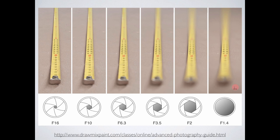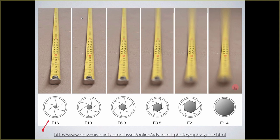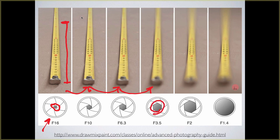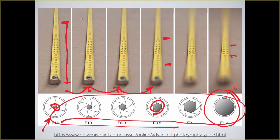Here it is in graphic form. At F/16, this is a very small aperture — a little bit of light coming into the camera — and a fairly large chunk of the tape measure is in focus. As you jump down each level and the aperture gets bigger, a smaller amount of the final image is in focus. At F/1.4 — a really big, wide-open lens — very, very little of the tape measure is actually in focus. Just by varying the aperture, we can control what's happening in our image. That's a really important concept to understand.